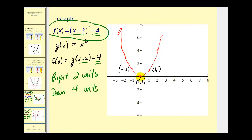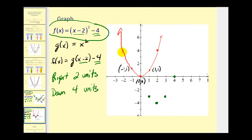Starting with the vertex, we shift it right 2 and down 4. Taking the point (−1, 1), shifting right 2 and down 4 gives (1, −3). Taking (1, 1), shifting right 2 and down 4 gives another point on the curve. Shifting (2, 4) right 2 and down 4 lands on the X axis, and shifting (−2, 4) right 2 and down 4 gives the origin. The translated function is this green parabola.